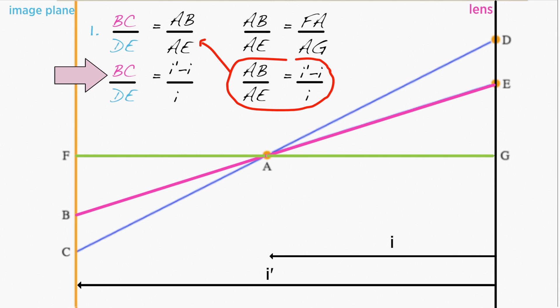Finally, we just solve for BC, which gives us our answer. BC equals DE times I prime minus I divided by I. Aha! We have an equation for the circle of confusion.